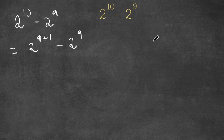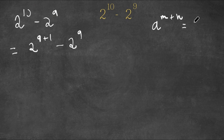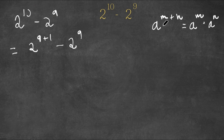Now an important property of exponents is that if we have something in the form a to the power of m plus n, this is equal to a to the power of m times a to the power of n. So the base simply distributes with the exponents.